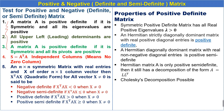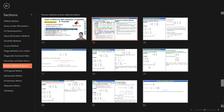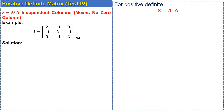In this lecture we will solve an example related to the fourth test. The fourth test states that the matrix S is equal to the product A transpose times A, with independent columns — meaning no zero column. Let's start. The fourth test for a positive definite matrix is: S is the product of matrix A transpose times A, which has independent columns, meaning no zero column.